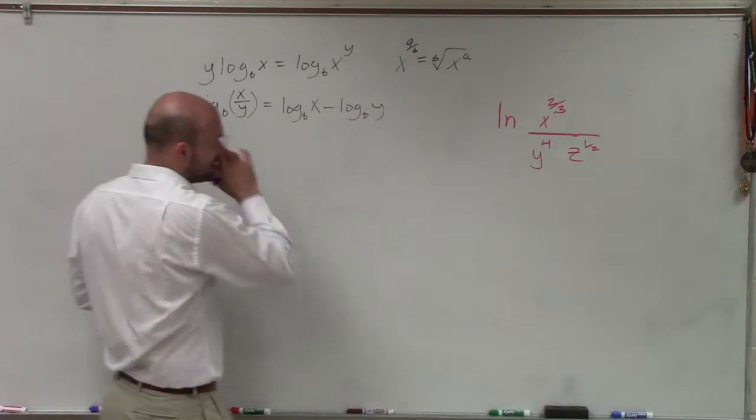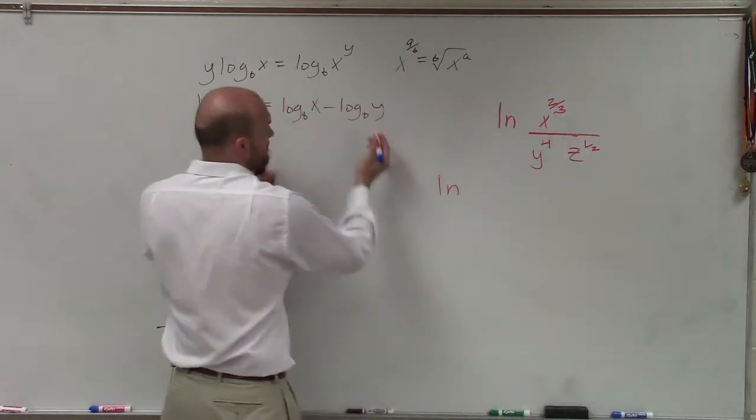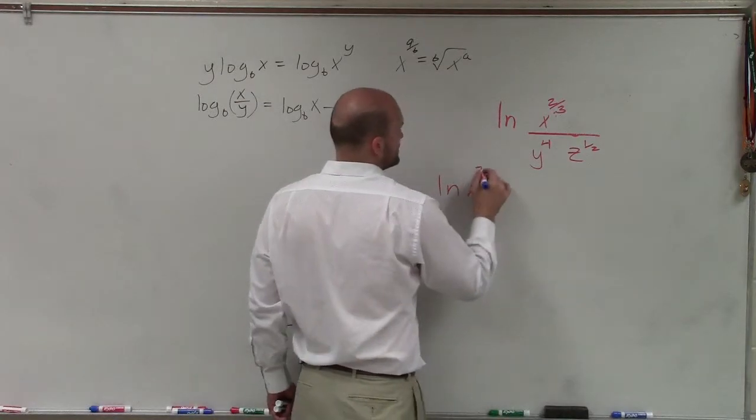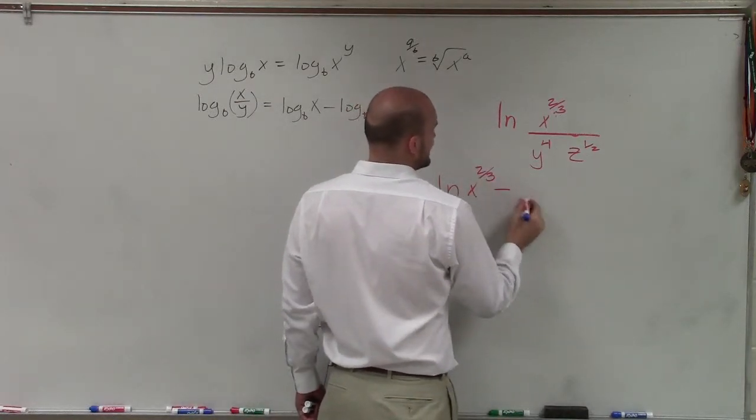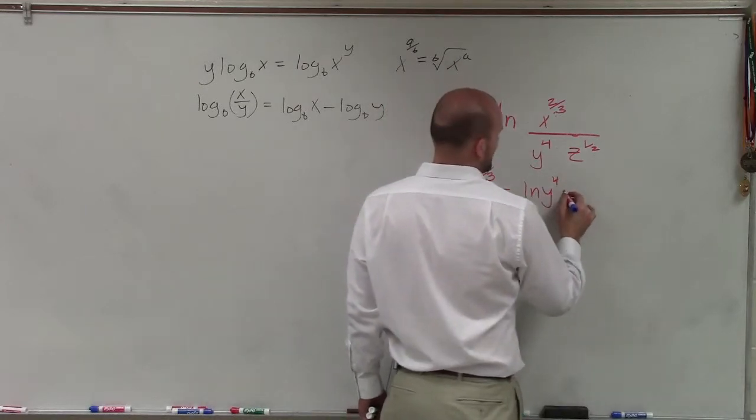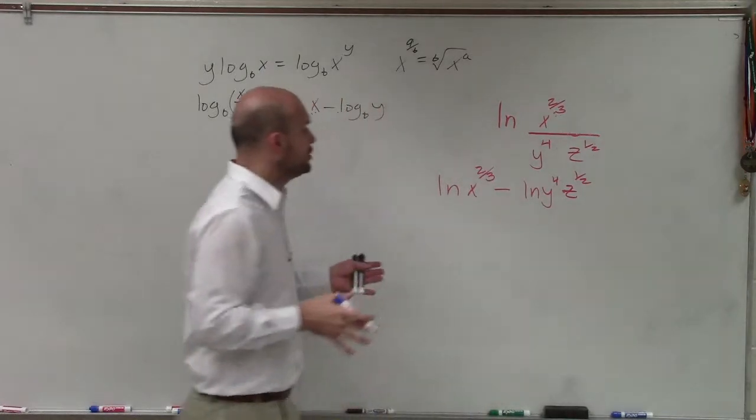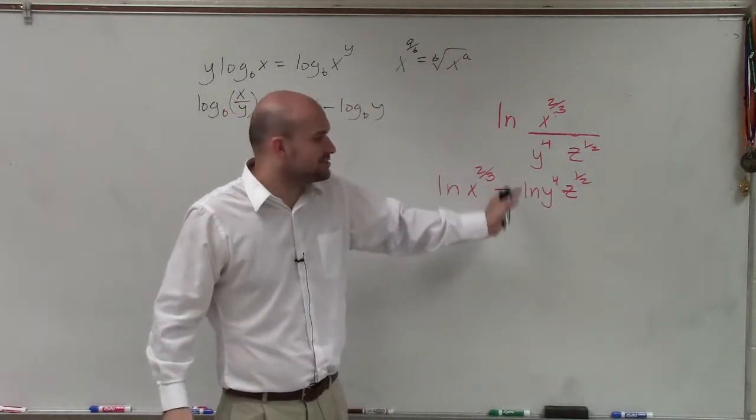Now what I'm going to do is I'm going to break this up as a quotient of logarithms. So therefore, the ln of x to the 2 thirds minus ln of y to the fourth times z to the 1 half. Now remember, you're subtracting your numerator and subtracting your denominator.